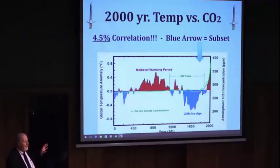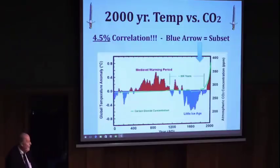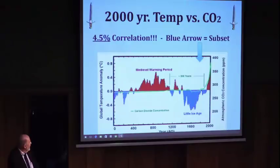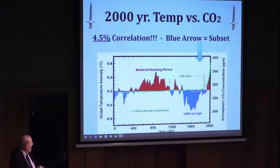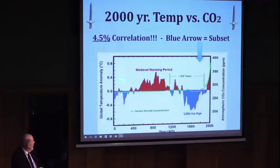This is a 2,000 year look at temperature versus CO2. CO2 is the green line running across here and then shoots up at the end of the little ice age. Meanwhile, the medieval warm period shoots up, the little ice age comes down — no effect whatsoever. Over a 2,000 year period, we have a 4.5% correlation. That's it.